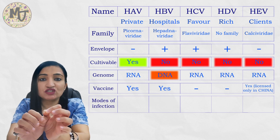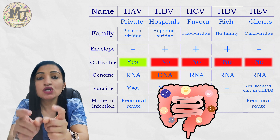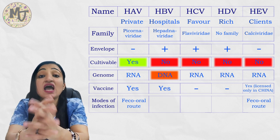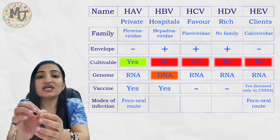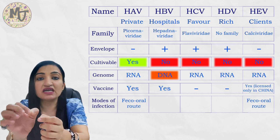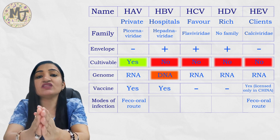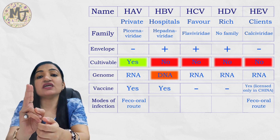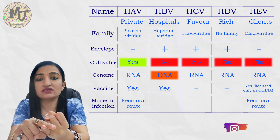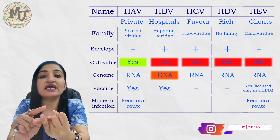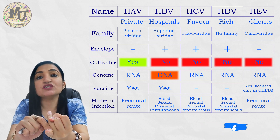Regarding modes of transmission: Hepatitis A and E — the vowels — are transmitted by the fecal-oral route. To survive in the gut and transmit infection this way, these viruses must be non-enveloped, because an envelope would be disrupted by bile salts in the gut. Most viruses causing GIT infection or spread by fecal-oral route are non-enveloped; the only important exceptions are coronaviruses and cytomegalovirus. Hepatitis B, C, and D can all be transmitted by transfusion of contaminated blood and blood products, sexually, perinatally, and percutaneously.